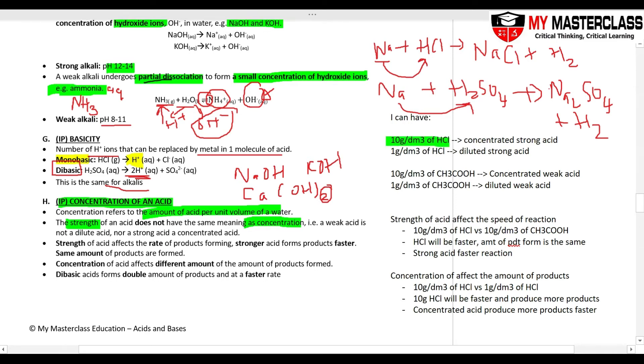I can have 10 grams of HCl. HCl, you have to know, is complete dissociation, strong acid. So this is concentrated strong acid. And I can have 1 gram of HCl. 1 gram is much less than 10 grams. It is diluted, but HCl is still HCl, pH 1, 2, 3. It is a strong acid.